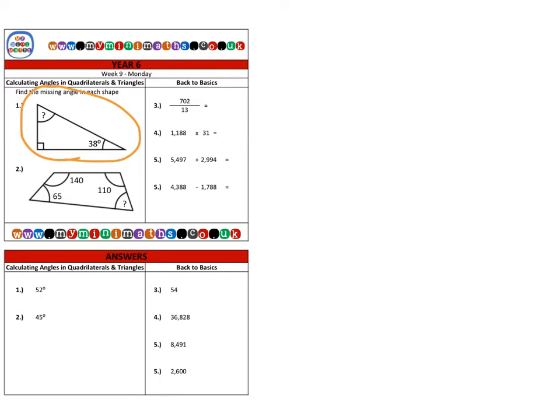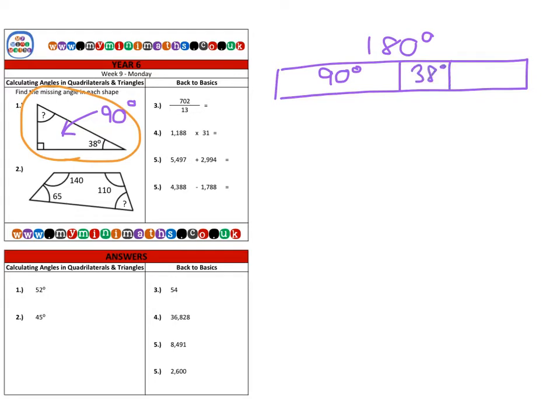The first thing we should identify is the right angle over here, which of course is going to be 90 degrees. If we know that all three angles in the triangle add up to 180 degrees, the first thing we can do is take the right angle away, and then we can take away the 38 degree angle, and it will leave us the remaining missing angle here.